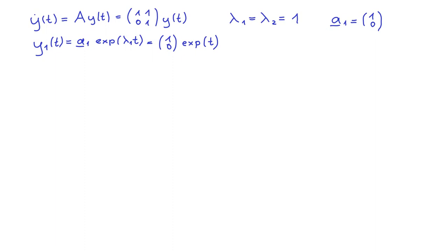A standard solution can be generated with this first eigenvector, namely A1 times the exponential of lambda 1t, which in this case is 1,0 times the exponential of t. And a second solution has to be found with the ansatz b plus ct times the exponential of lambda 2t. And since lambda 2 is 1, this simplifies to b plus ct times the exponential of t.